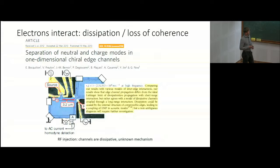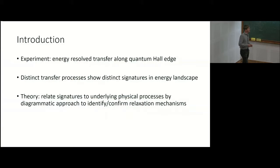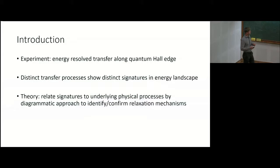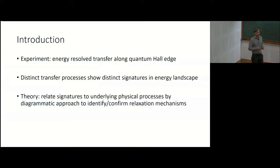Now I want to go to the experiment presented by Thomas. As you saw, it allows energy-resolved transfer of electrons along the quantum Hall edge — the energy of the incoming electrons is fixed and the energy of the outgoing electrons is fixed. In this way they were able to show distinct signatures in the energy landscape of the emitter and detector quantum dot. The goal of the theory is to relate those signatures to the underlying physical processes by a diagrammatic approach, in order to identify and confirm the origin of those relaxation mechanisms.